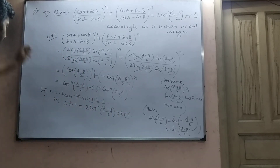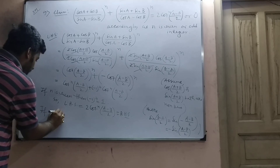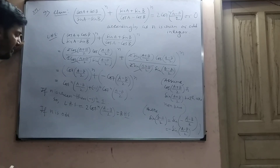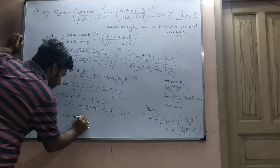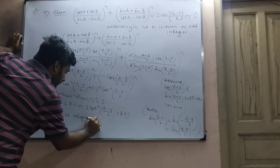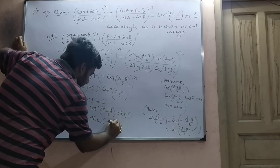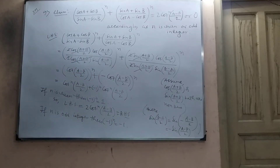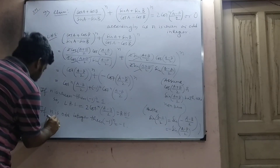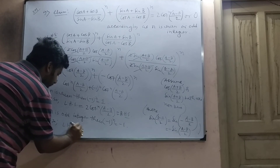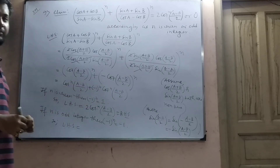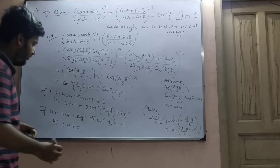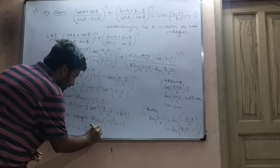And if n is odd, then (−1)^n equals −1, because (−1)^3 is −1, (−1)^5 is −1. So LHS equals cot^n((A−B)/2) minus cot^n((A−B)/2). These two cancel out, so you have 0.